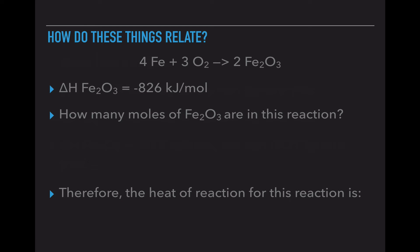So let's do some math. If the heat of formation of iron oxide, and if we look at this iron oxide chemical formula, notice that there is no number in front of it. So that means that this is the heat of formation of one mole of iron oxide is negative 826 kilojoules per mole. In this reaction, we actually have two moles of iron oxide.